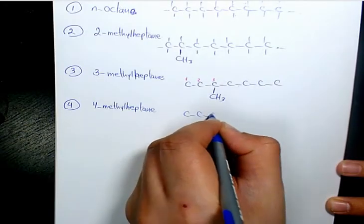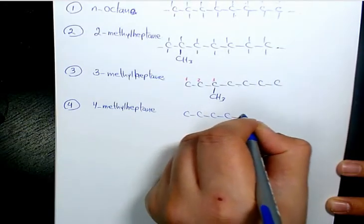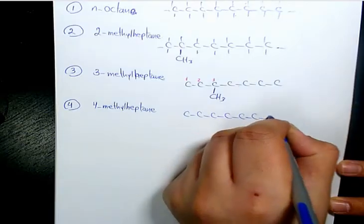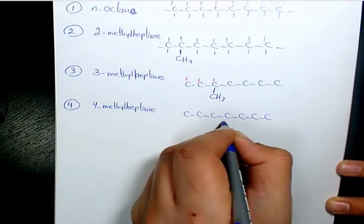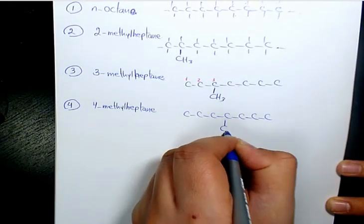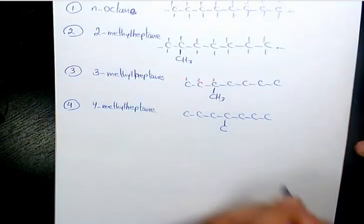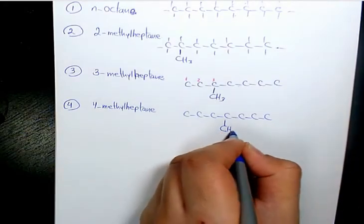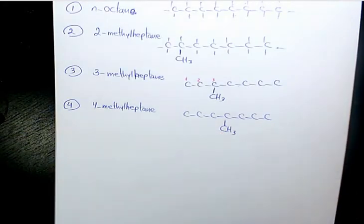Number four is going to be 4-methylheptane, which is 1, 2, 3, 4, 5, 6, 7 carbons and we have a methyl group on the fourth carbon.